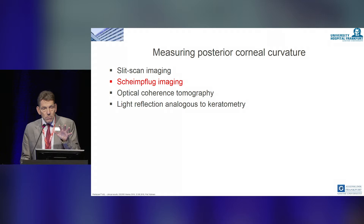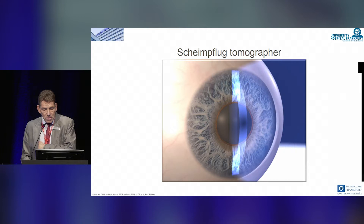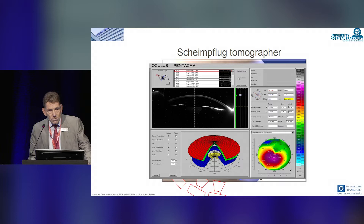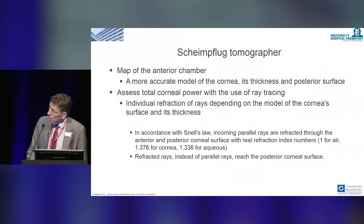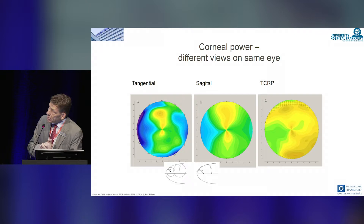We are focusing here on Scheimpflug imaging. We produce an image from the anterior segment, which is then distributed in a map that gives you a lot of information. Looking at the map of the anterior chamber, in accordance with Snell's law, you see a corneal power map with different views on the same eye: tangential, sagittal, MAC, and total corneal refractive power.